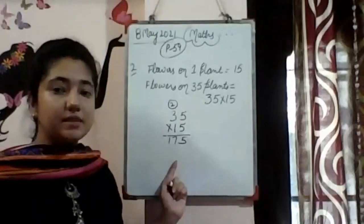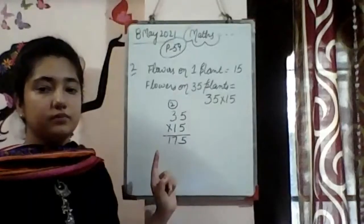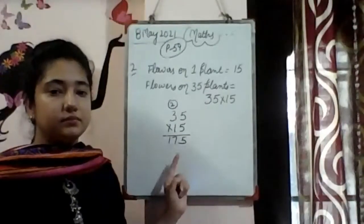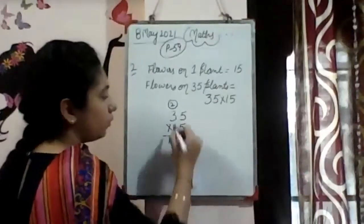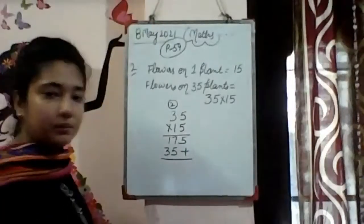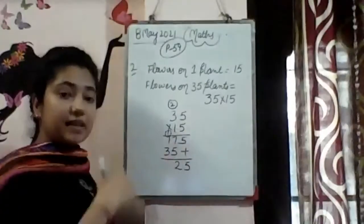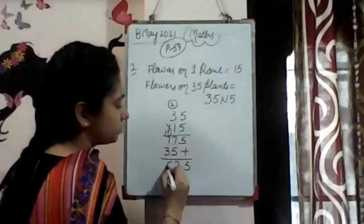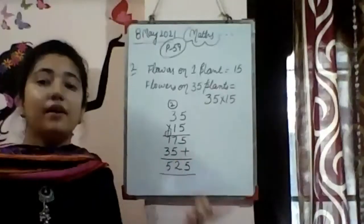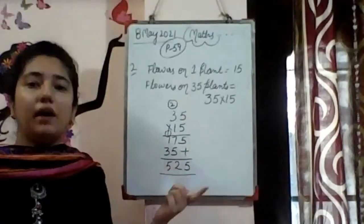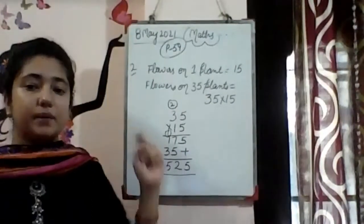At ones place, what we will put? Zero. 1 times 5 is 5, 1 times 3 is 3. Now we are going to add these two numbers. 5 as it is. 7 plus 5 is 12, 2 here and 1 carried over. 1 plus 7 is 8. 3 plus 1 is 4, 4 plus 1 is 5. So very good, 525.